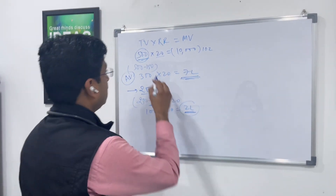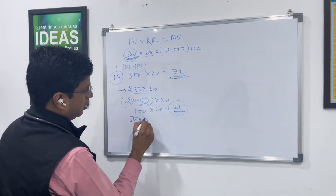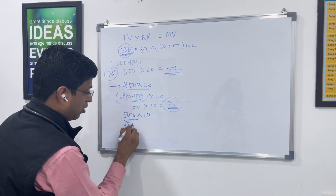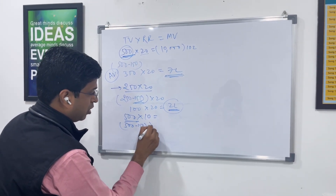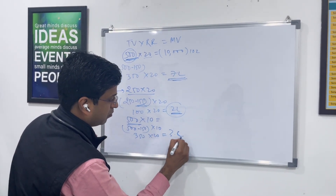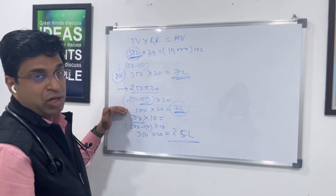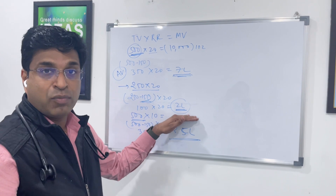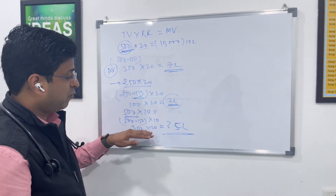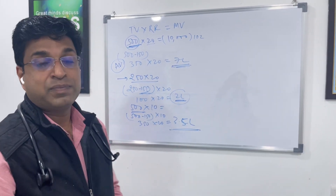Now, keeping tidal volume the same at 500 mL and decreasing the respiratory rate by 50% to 10: alveolar ventilation will be 500 minus 150, multiplied by 10, which is 350 into 10 — giving 3.5 liters. So decreasing the respiratory rate by 50% decreases alveolar ventilation to a lesser degree compared to reducing tidal volume.